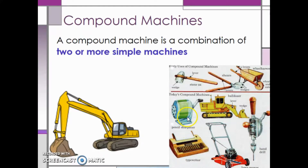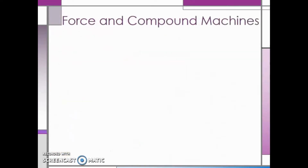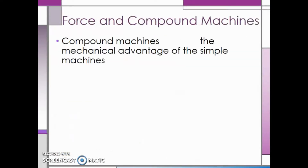Today compound machines look a little different. For example, a pencil sharpener, typewriter, lawnmower, hand drill, or bulldozer can all be thought of as compound machines because they are each made up of several simple machines.